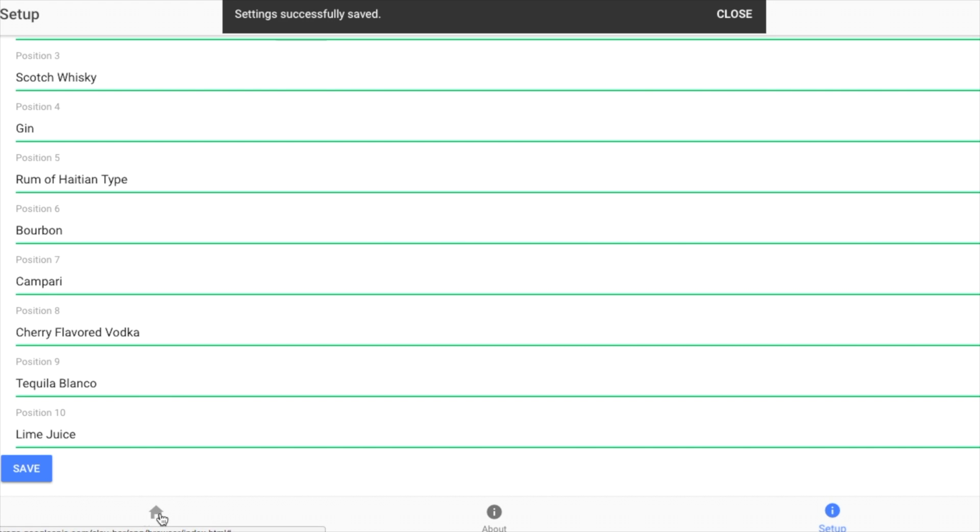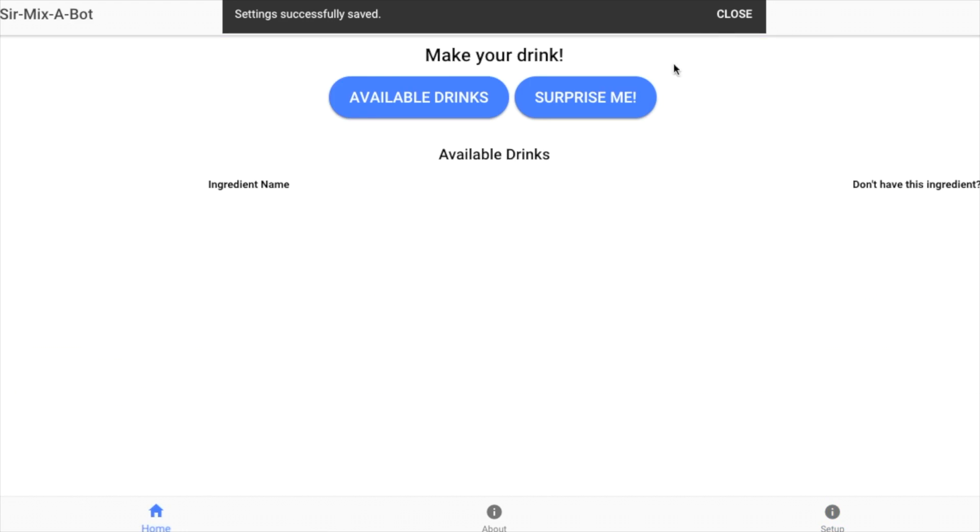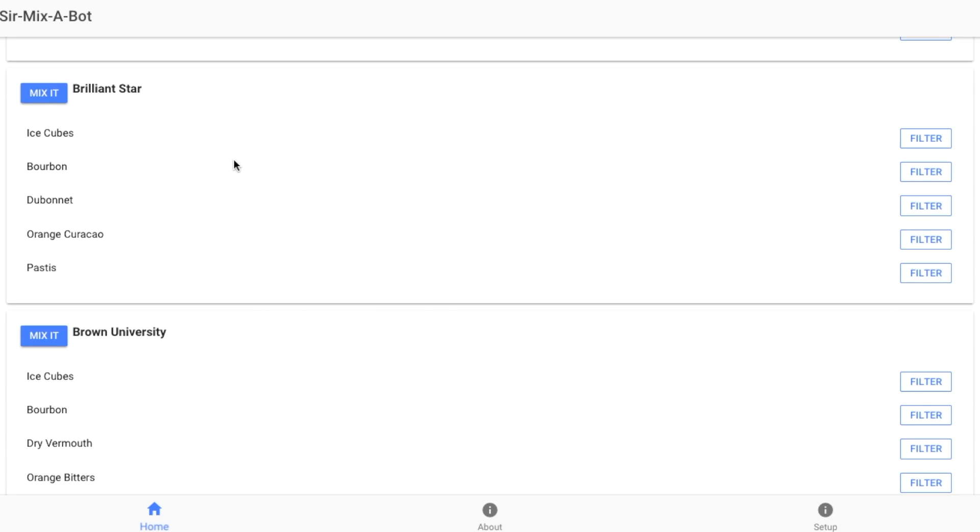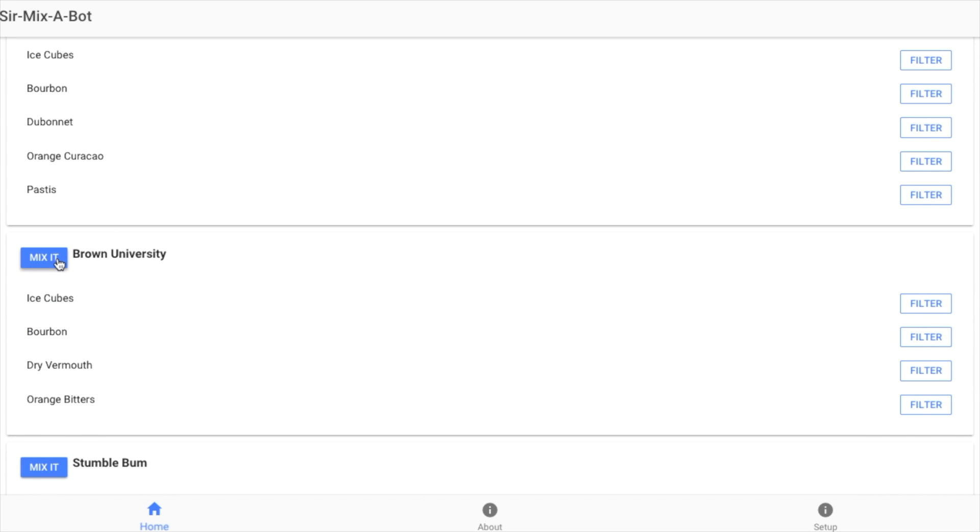When we save and return to the order page, things will look a bit different once we update the available drinks list. Now you can see how many cocktails are available using your ingredients. Choose your cocktail, and it's on to the next step.